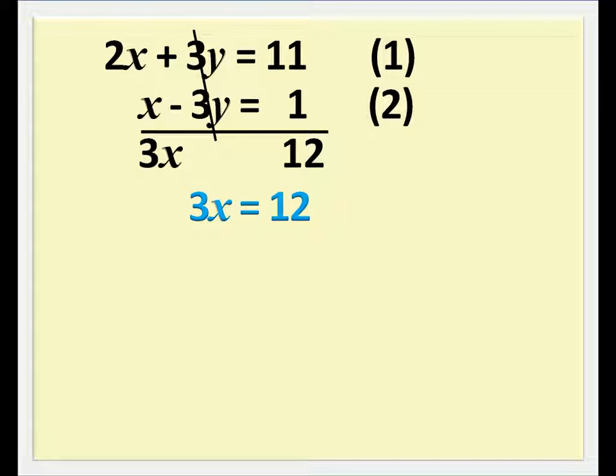So we say 3x equals 12. Making x a standalone, the 3 multiplying x at the left hand side must move to divide the 12 at the right hand side, giving us 4.